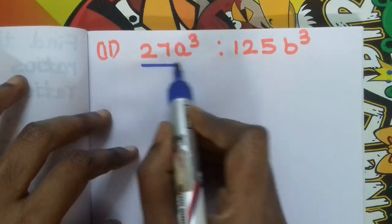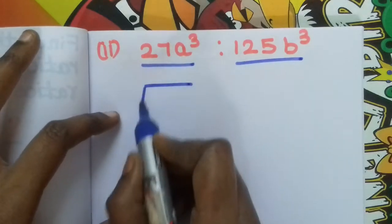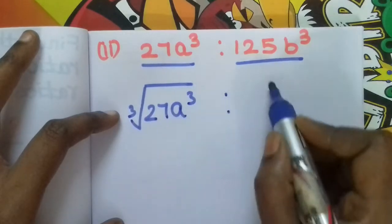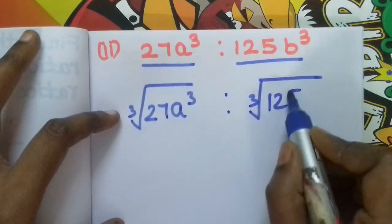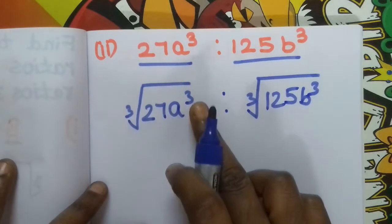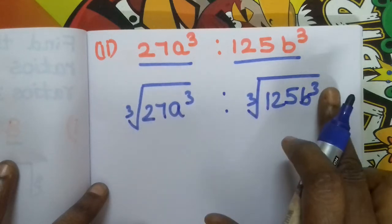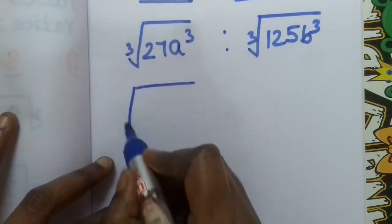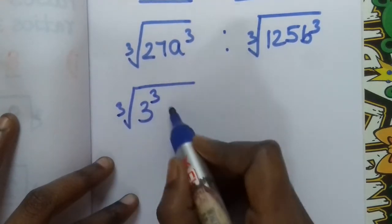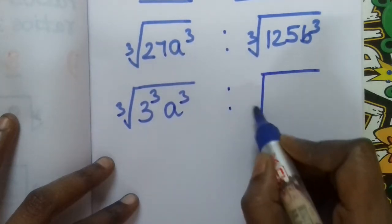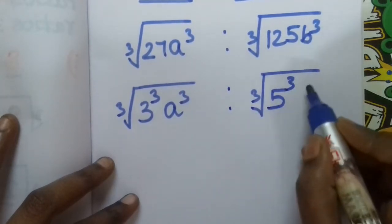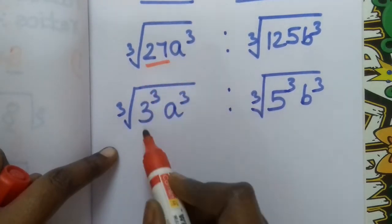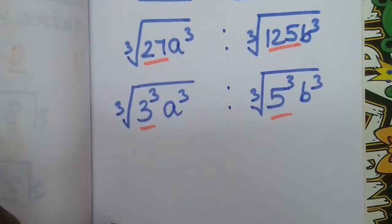Second question. This is your antecedent and this is your consequent. We apply the cube root. So the cube root of 27a³ is to the cube root of 125b³. The numbers are in cube format and the variables are also in cube format. So the cancellation is easy. Here, 27a³ equals 3 cubed times a cubed.